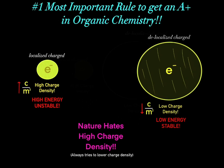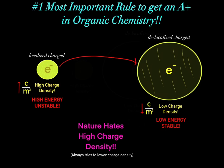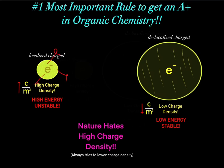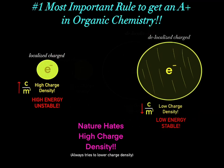The key idea is that nature hates high charge density because it's high in energy and unstable. Nature always tries to take high charge density and delocalize it to create a lower charge density. Because when we decrease the charge density — when we spread out that charge — that's lower in energy and that's more stable. So nature always tries to accomplish this.